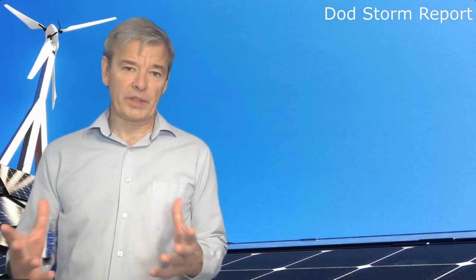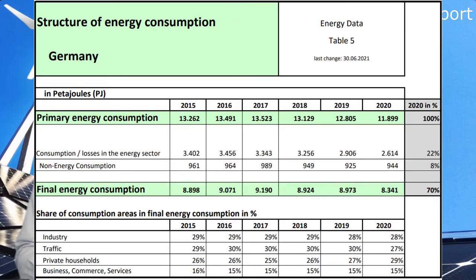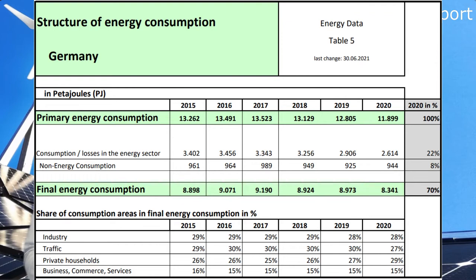Now let's see where all this primary energy goes. In 2020, there were 11,899 petajoules of primary energy. Then there are consumption and losses in the energy sector: when producing electricity from coal or gas, you lose a lot of energy through the thermal process — in a coal plant two-thirds of energy is simply lost through the cooling tower. These losses amount to 2,614 petajoules.